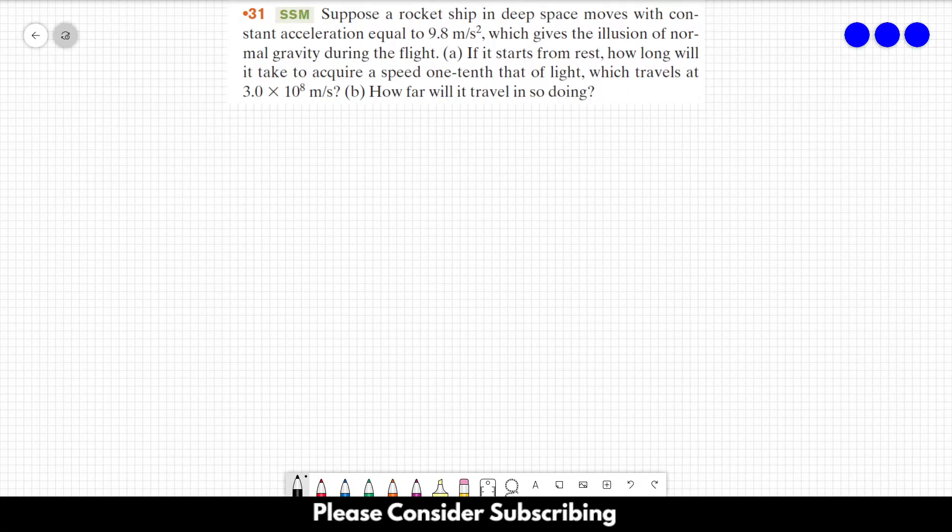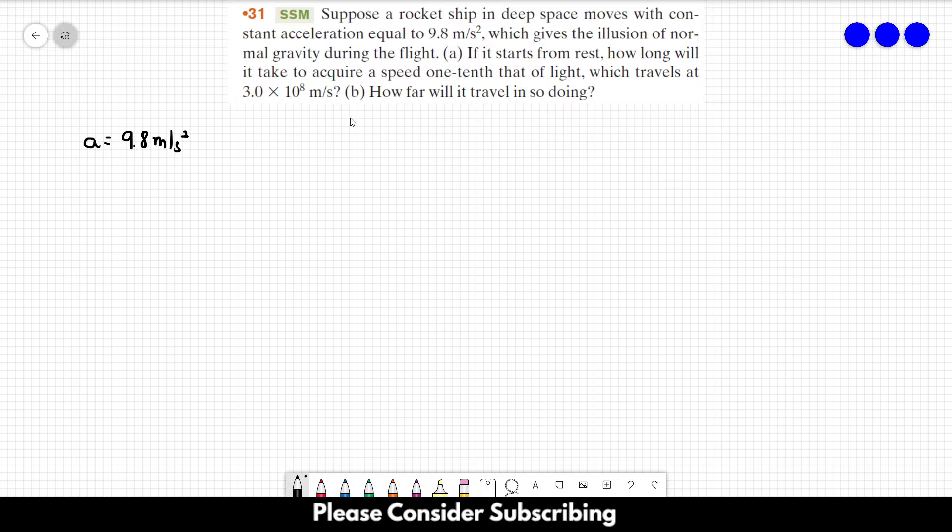Problem 31. Suppose a rocket ship in deep space moves with constant acceleration equal to 9.8 meters per second squared. The acceleration of 9.8 m/s² gives the illusion of normal gravity during the flight.